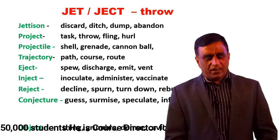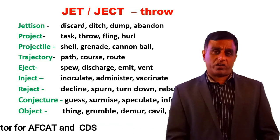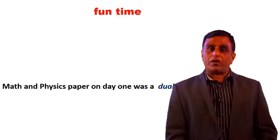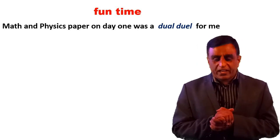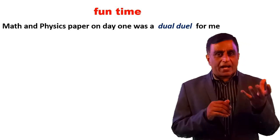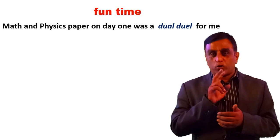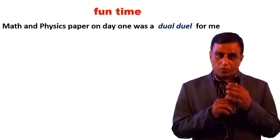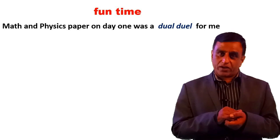Let's move ahead. The word 'object' — kisi vastu ka naam hota hai — but 'I object to what you say' means to protest. Now let's have some fun: math and physics paper on the same day was a dual and a duel for me. DUAL (D-U-A-L) means two; DUEL (D-U-E-L) means a kind of fight or challenge. So on one side math, the other physics — that became a dual duel situation.